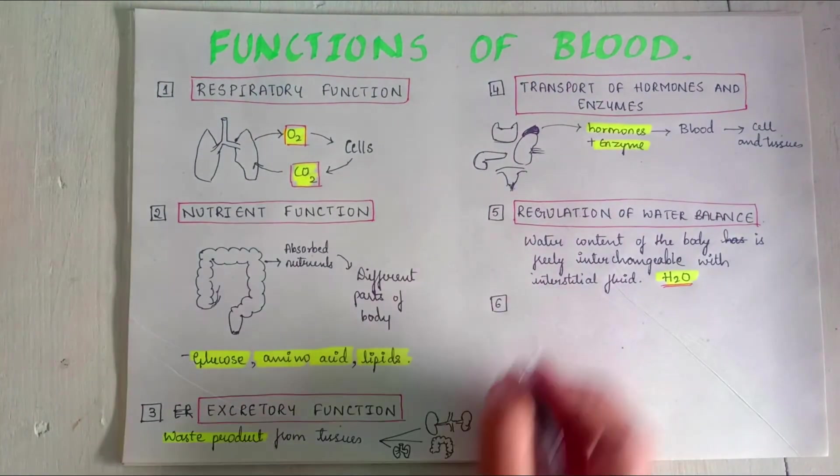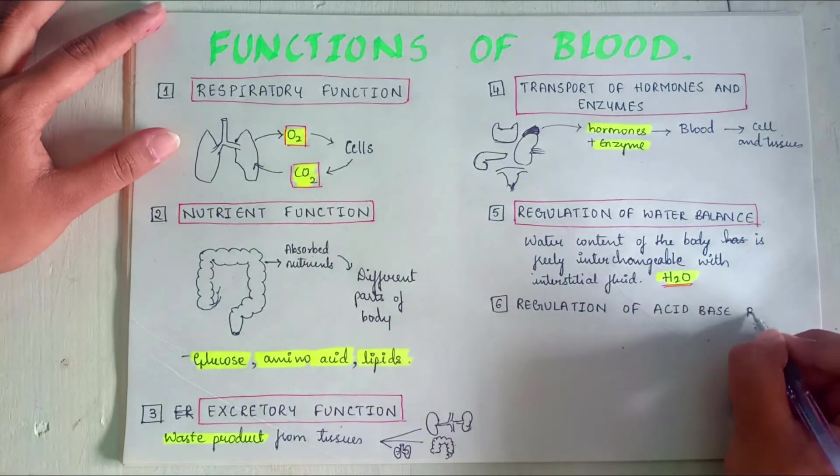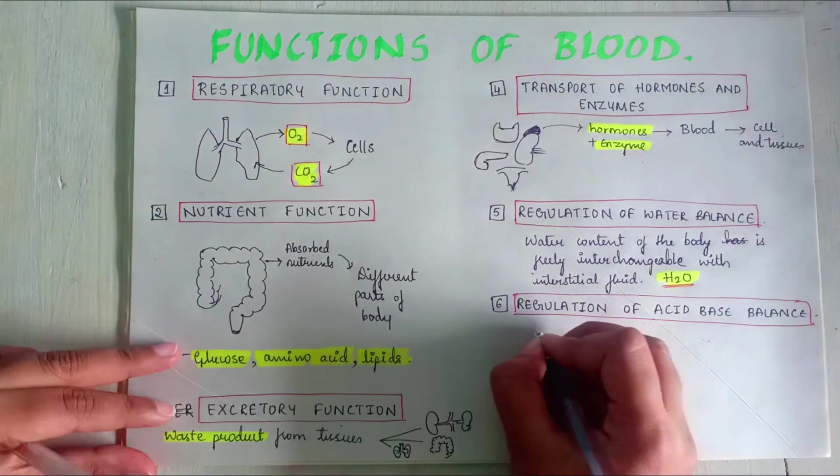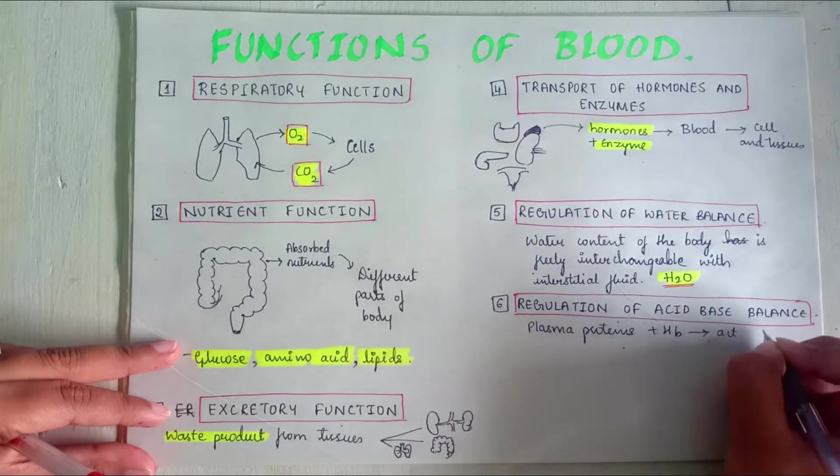Sixth, regulation of acid-base balance. The plasma proteins and hemoglobin act as buffers and help in regulation of acid-base balance.